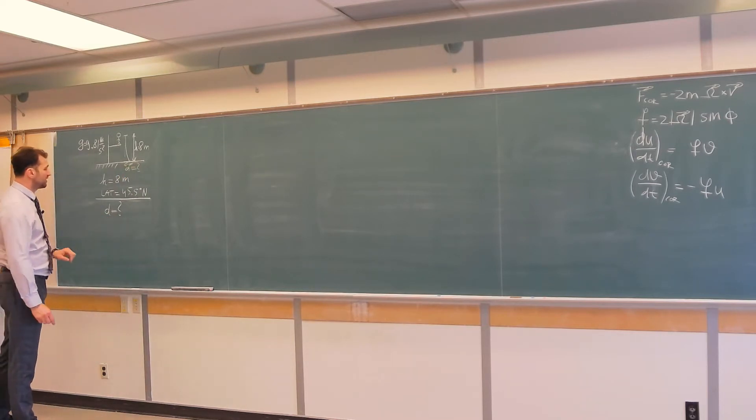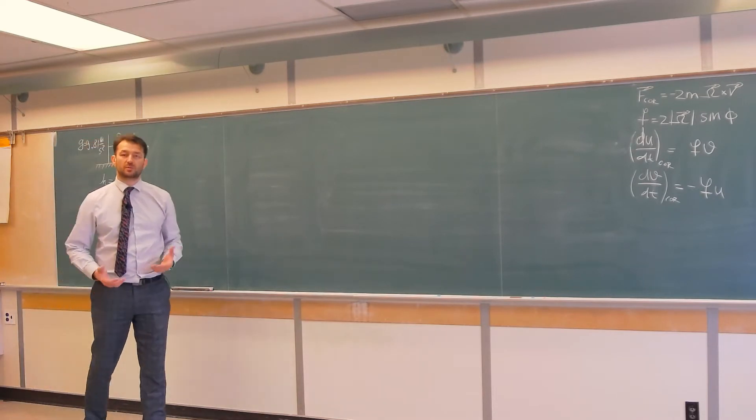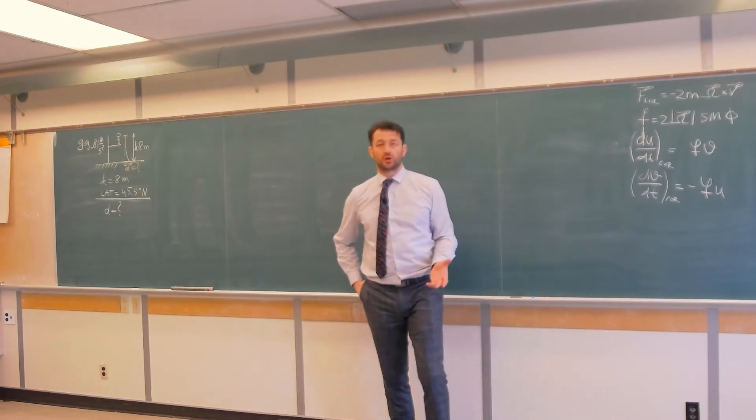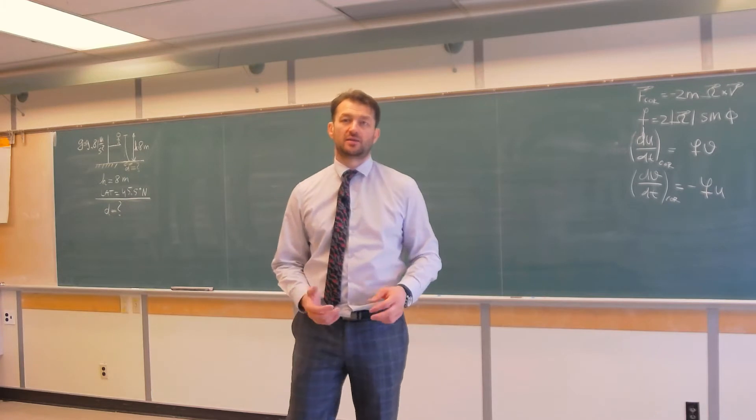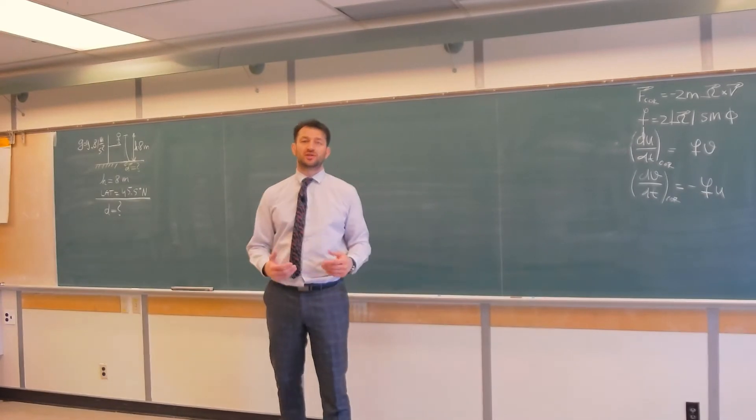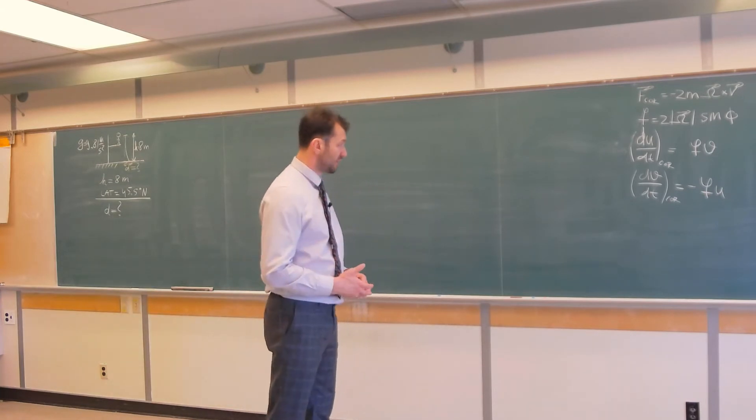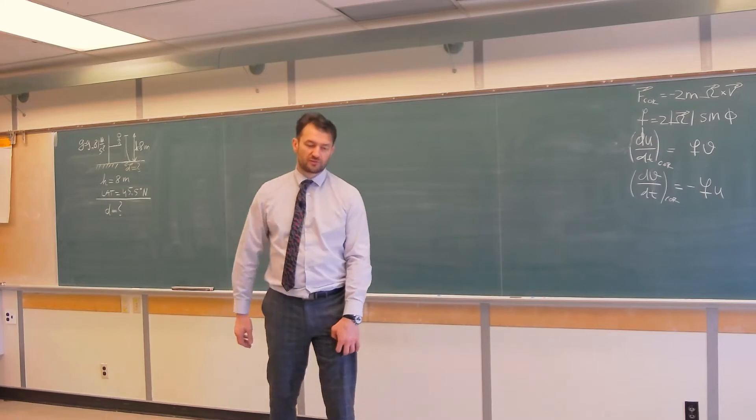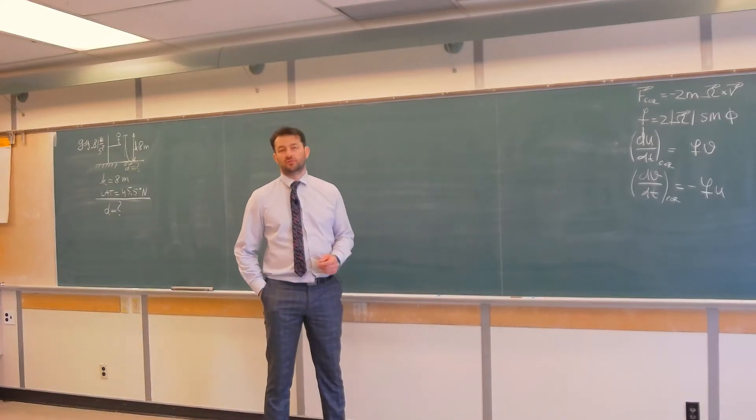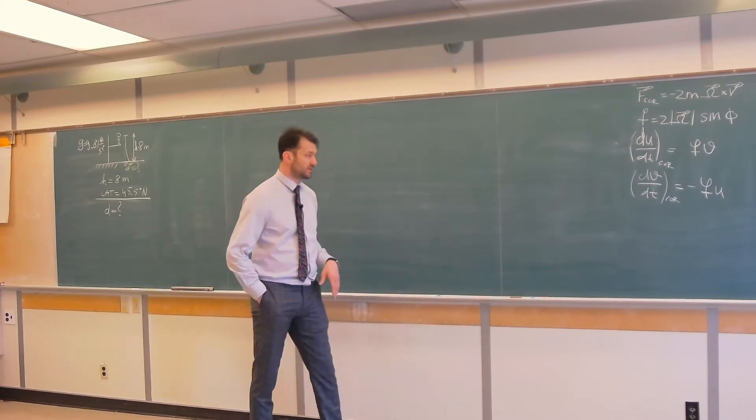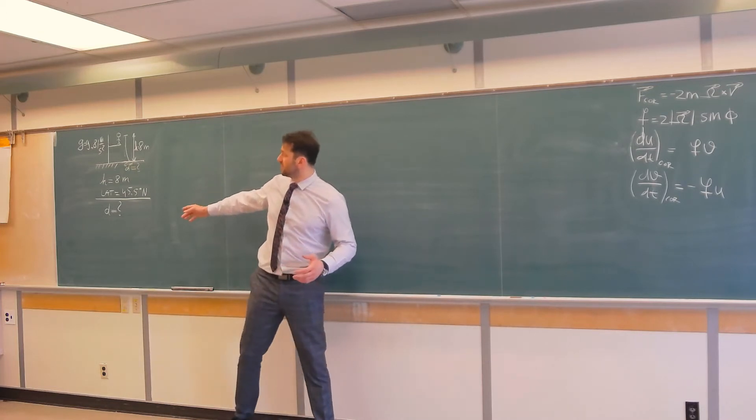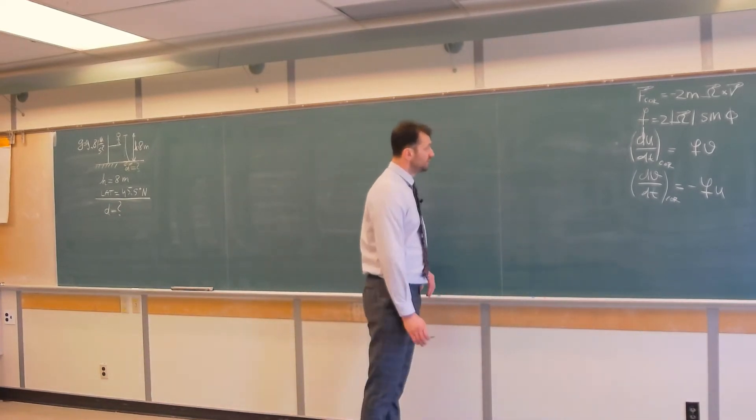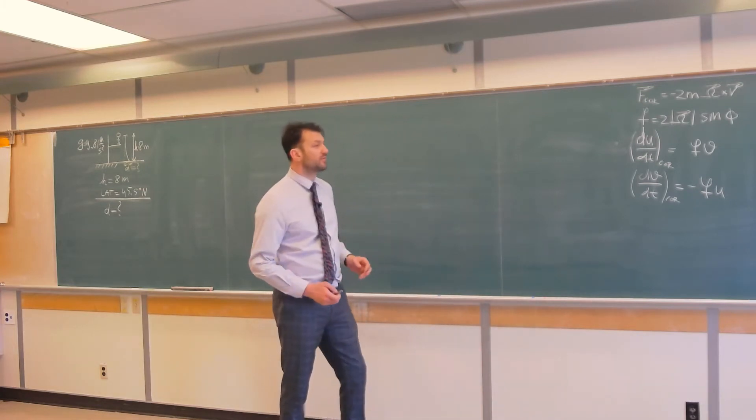Gravity g is 9.81 meters per second squared. Before we start solving this problem, some of you might say there was no vertical component of the Coriolis force, and now it seems we are asked to find vertical component that is causing acceleration in the horizontal direction. The answer is we neglect that component of the Coriolis force in the vertical direction, because it is very weak compared to the horizontal components. Today we will demonstrate that this d is indeed a very small number.